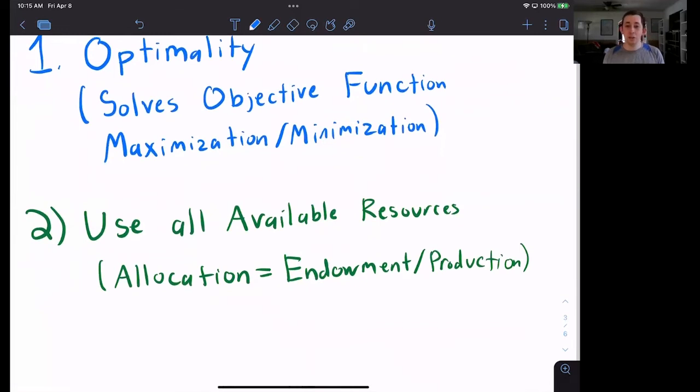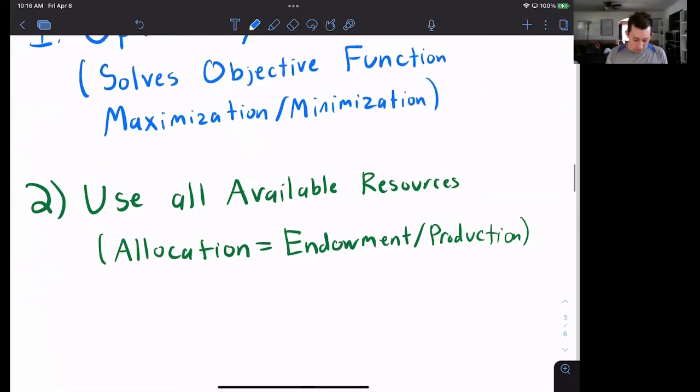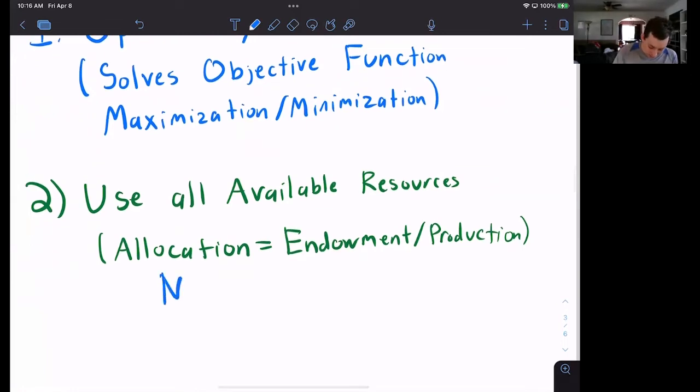You need to use all the resources available in your economy. That's what we're going to call market clearing. So your allocation, the total amount of stuff in your allocation, needs to be equal to the total amount of stuff that you either produce in the economy or that you wake up in the morning and find on your doorstep. This is also referred to as no waste.